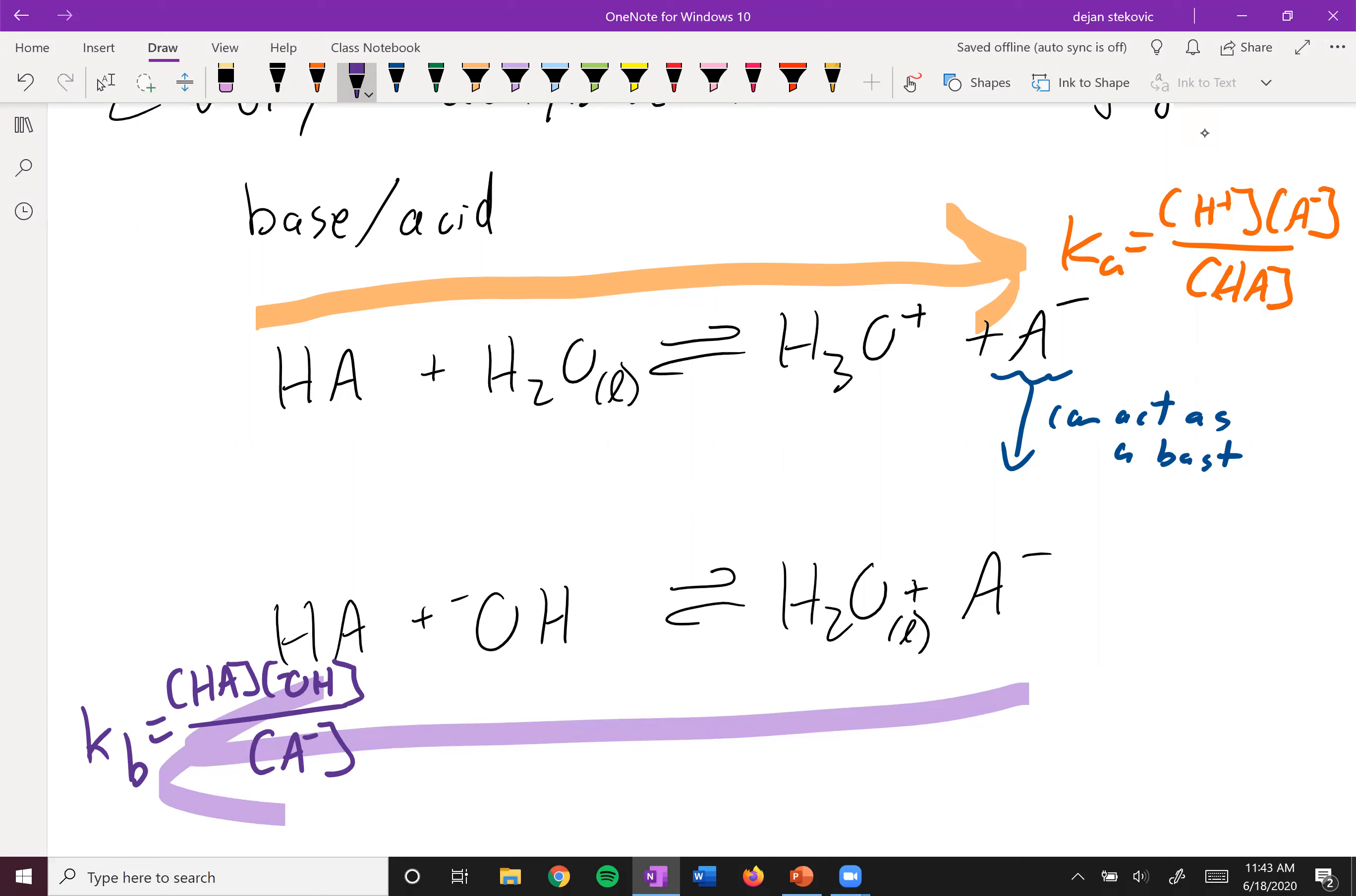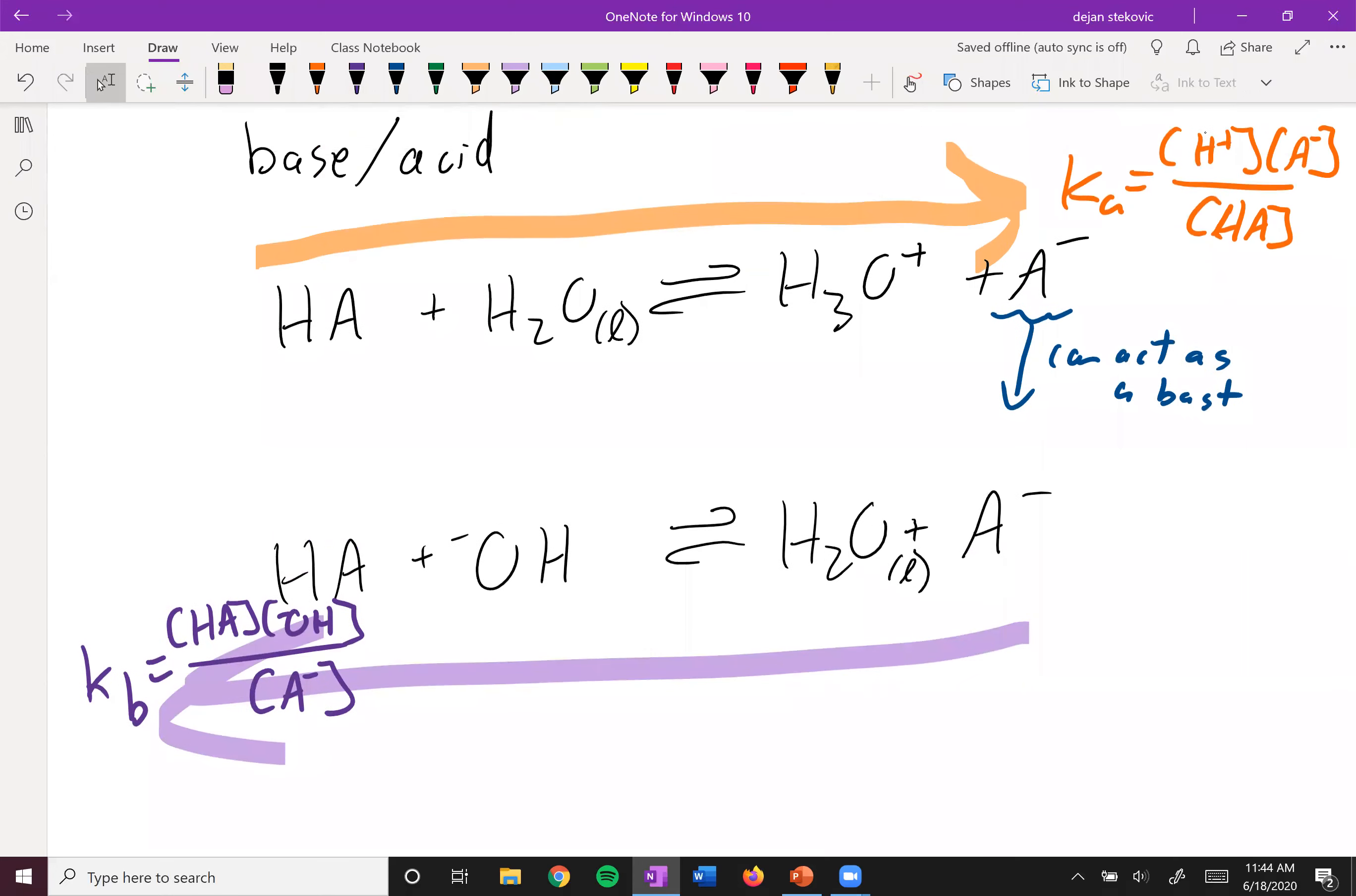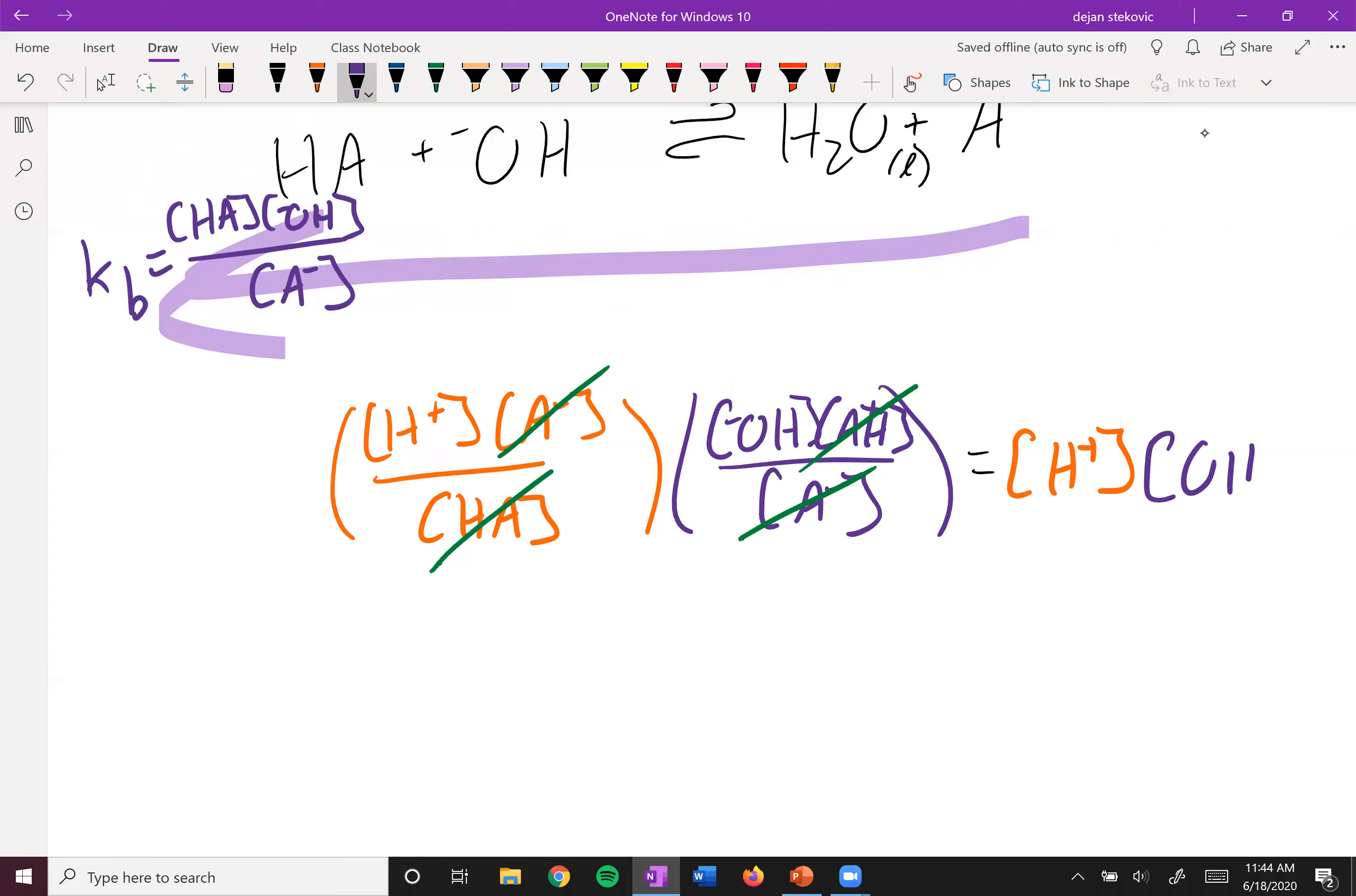So conjugate acid base pairs, and the reason this is important is because if we multiply these two values, the KA and the KB value for an acid base conjugate pairs, we end up with something pretty cool. So let's see what happens when we multiply these two. KA is H plus times A minus over HA. KB is going to be hydroxide times HA over A minus. And now we're going to see some stuff cancel out. A minus will cancel with A minus, HA will cancel with HA. And so your final answer is going to be equal to H plus times the concentration of hydroxide. And we know that this is equal to KW, which equals 1.0 times 10 to the negative 14.